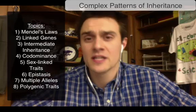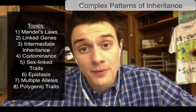The topics we're going to look at today deal with Mendel's laws — three of them: dominance, segregation, and the law of independent assortment. Then we're going to break down seven different types of complex patterns of inheritance: linked genes, intermediate inheritance (otherwise known as incomplete dominance), codominance, sex-linked traits, epistasis, multiple alleles, and we'll finish with polygenic traits. Without further ado, let's jump right in.